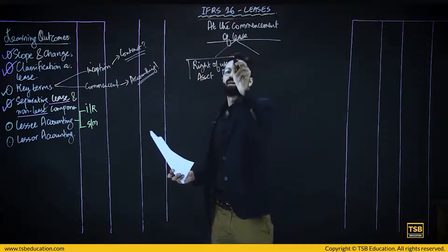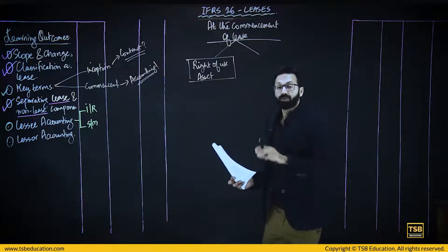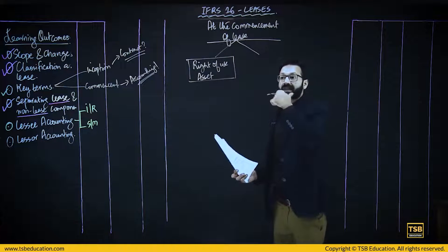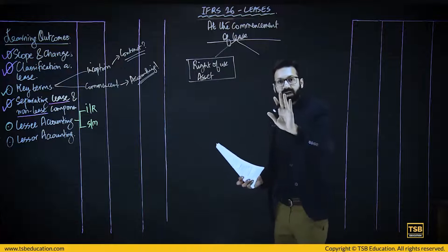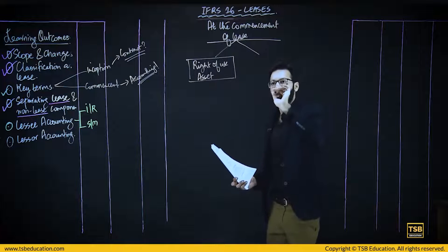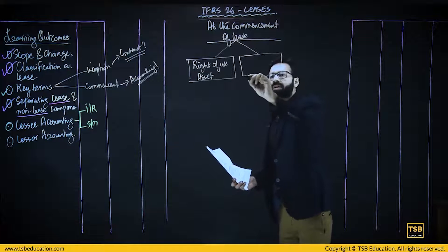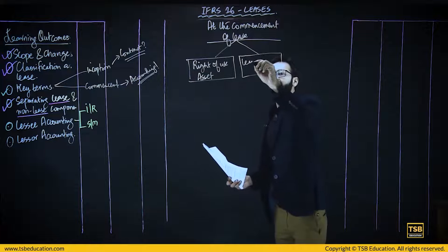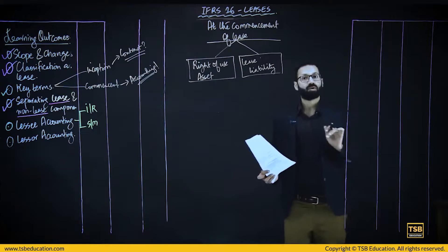So you recognize a right-of-use asset. The other component will be a lease liability, because you also need to pay for that right-of-use asset, so a lease liability record will be created.